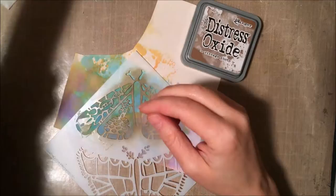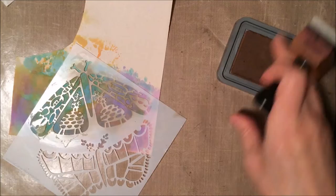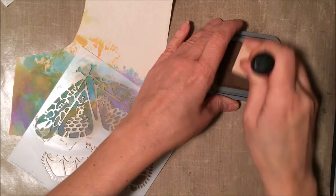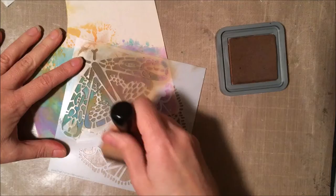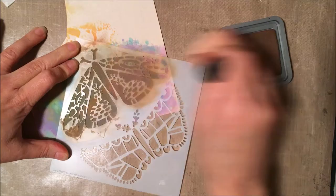So I'm just finding some placement here. I am going to use the Vintage Photo Oxide Ink to add my stenciling. I think distress inks have to be one of my favorite mediums with stencils because it's so quick and easy. Great to create backgrounds. Or in this case, I'm using this butterfly as a focal point on my card.